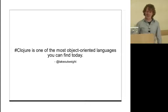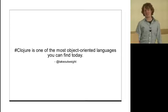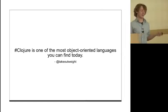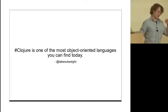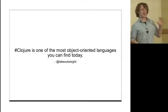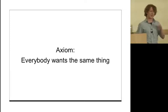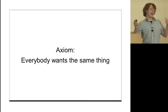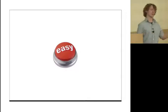This is a tweet I saw the other day: Clojure is one of the most object-oriented languages you can find today. It's a pretty thought-provoking tweet. There's been a lot of controversy lately about what object-oriented programming means exactly. Clojure has got some aspects of object-oriented programming that are really interesting. The SOLID principles are from object-oriented programming, and I think from these different paradigms, we're all actually after the same thing. We all want programming to be easy, we want things to be easy to change and easy to add on to.